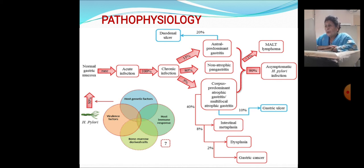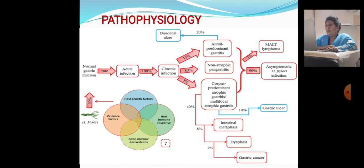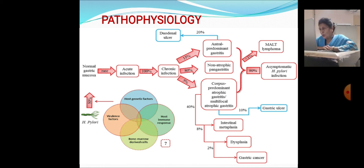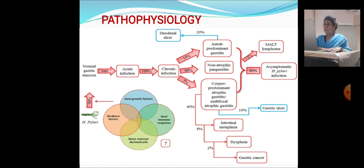Corpus predominant or multifocal atrophic gastritis: 10 percent of people lead to gastric ulcer. This can also lead to 90 percent of asymptomatic H. pylori infection or mild lymphoma. H. pylori host genetic and virulence factors, bone marrow-derived cells, and host immune response all play a role, with up to 50 percent then leading to normal or abnormal gastric outcomes.